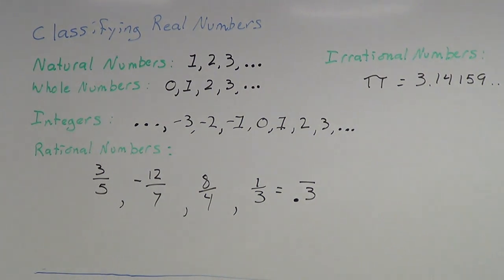And so those are your five classifications of real numbers. Natural numbers, whole numbers, integers, rational numbers, and then also irrational numbers.